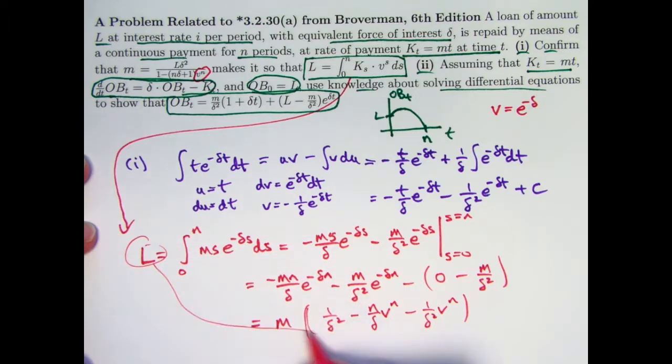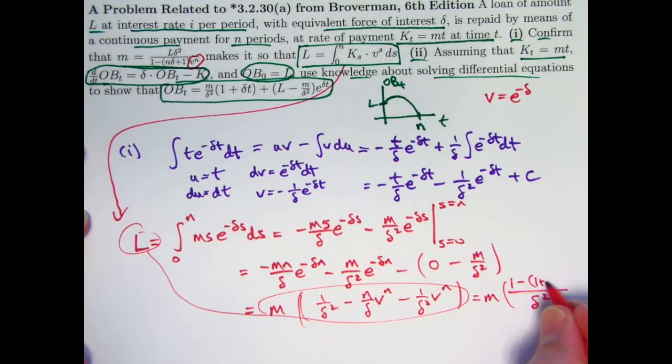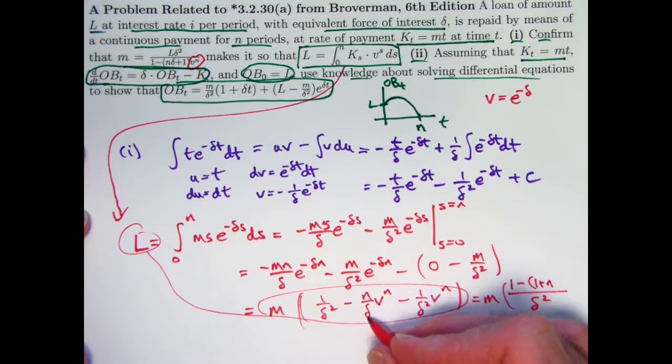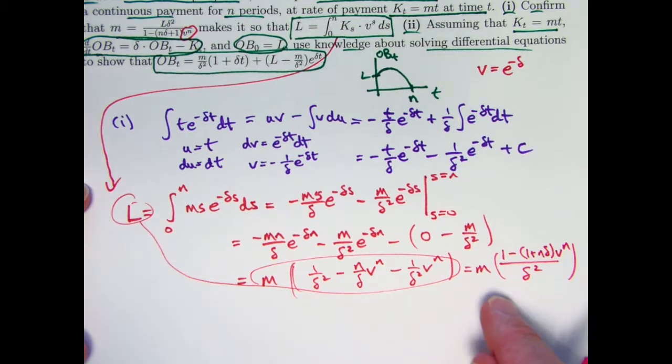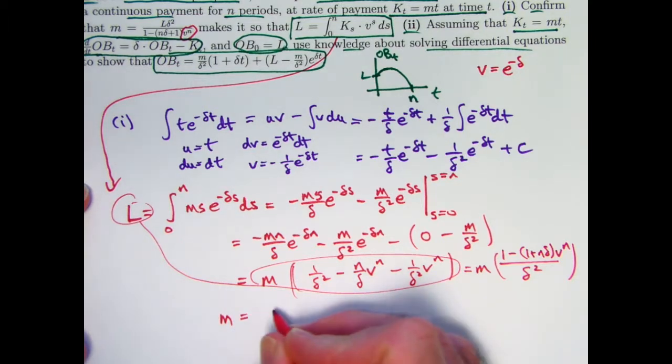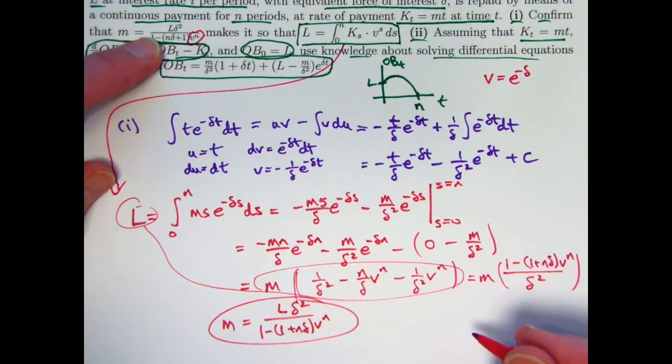I want to solve this equation for M. We're going to get a common denominator here of delta squared. I'm going to need another delta there because there's only a delta there. Yeah, now just solve for M. Multiply both sides by delta squared. Divide both sides by this thing. M is, don't forget about the L, L times delta squared over 1 minus, in parentheses, 1 plus N delta times V to the N. And that does match this. Okay, with no mistakes it looks like. Yeah, that looks good.